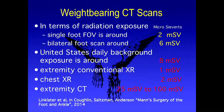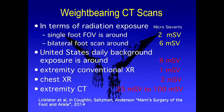Radiation exposure is really interesting. A single foot x-ray is about 2 millisieverts; bilateral is about 6. Daily background exposure is about 8 — so sending someone for an x-ray is roughly equivalent to a day at the beach or skiing in Vail. Conventional x-rays are about 1, a chest x-ray about 2, and an extremity CT is 25 to 100 millisieverts — a lot more. Weight-bearing CT scans come in at about 6 millisieverts, so there's a significant difference compared to conventional CT.